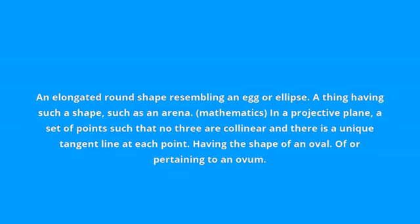Oval. An elongated round shape resembling an egg or ellipse. A thing having such a shape, such as an arena.